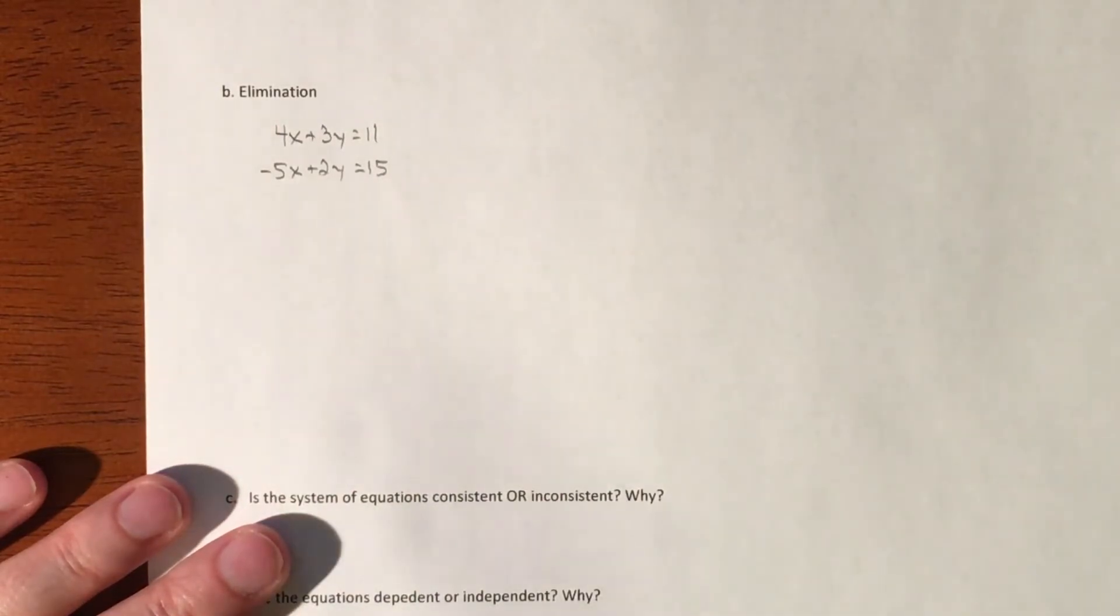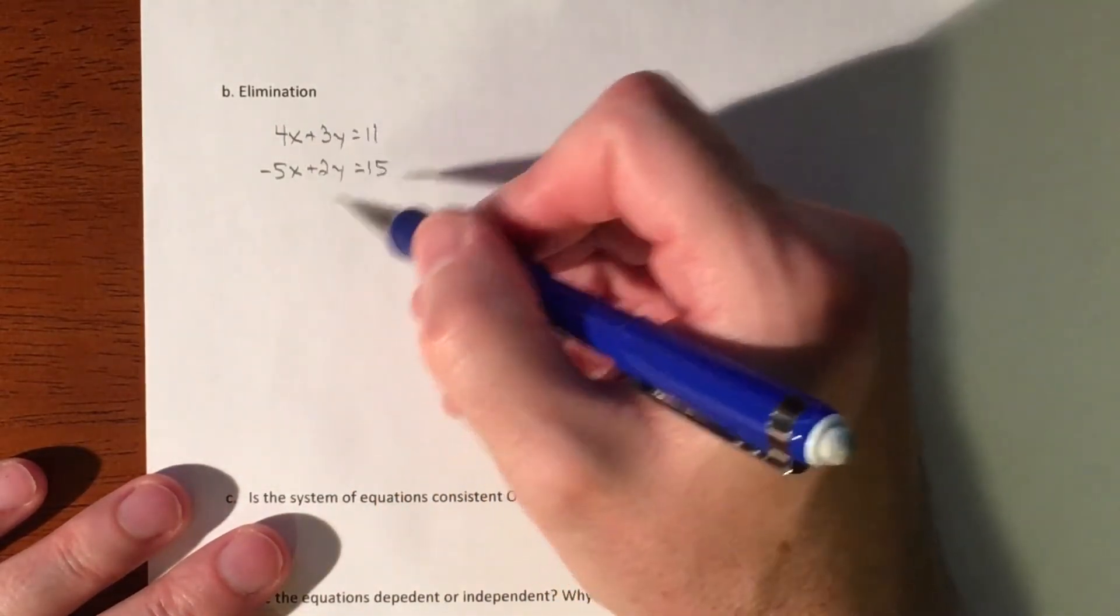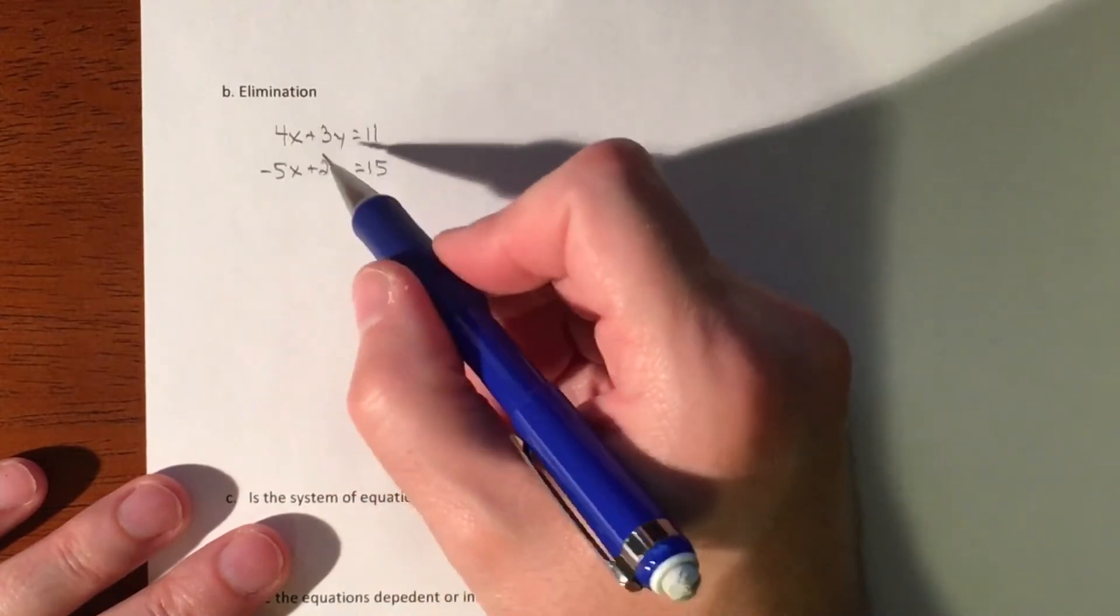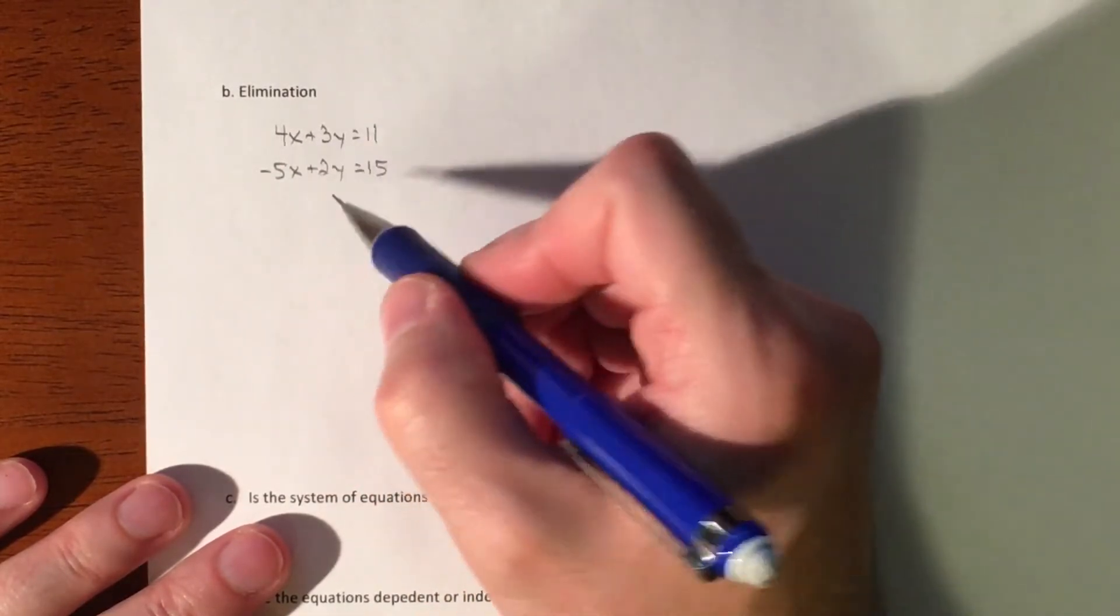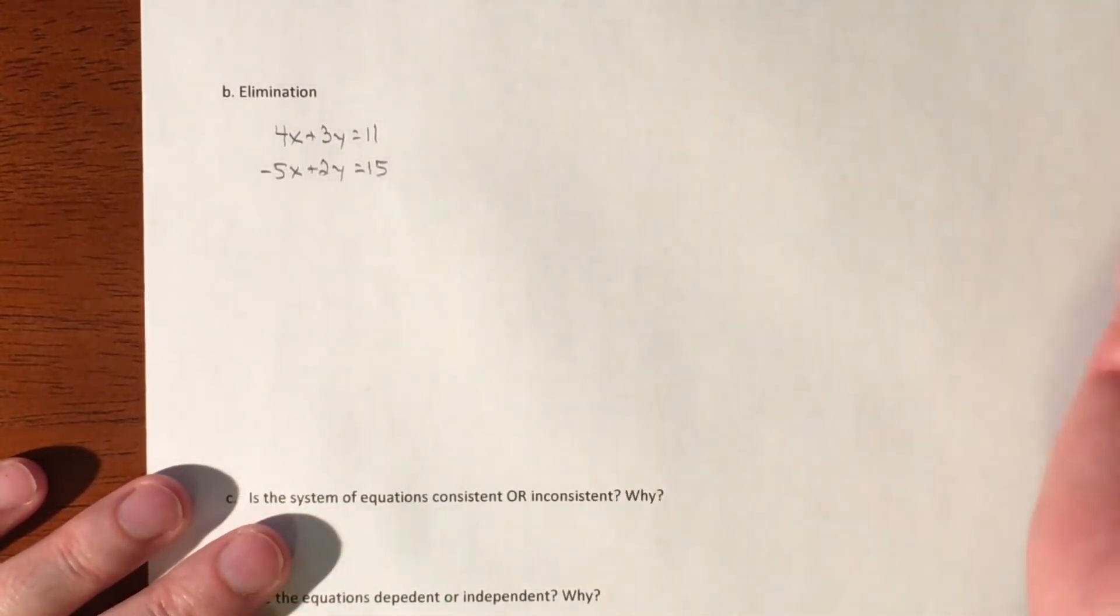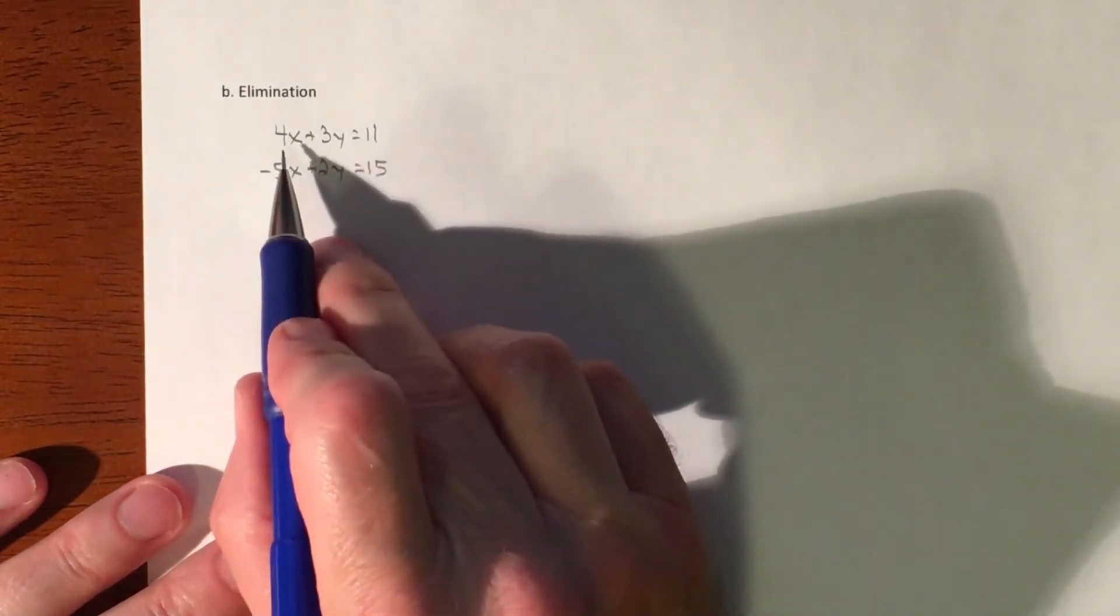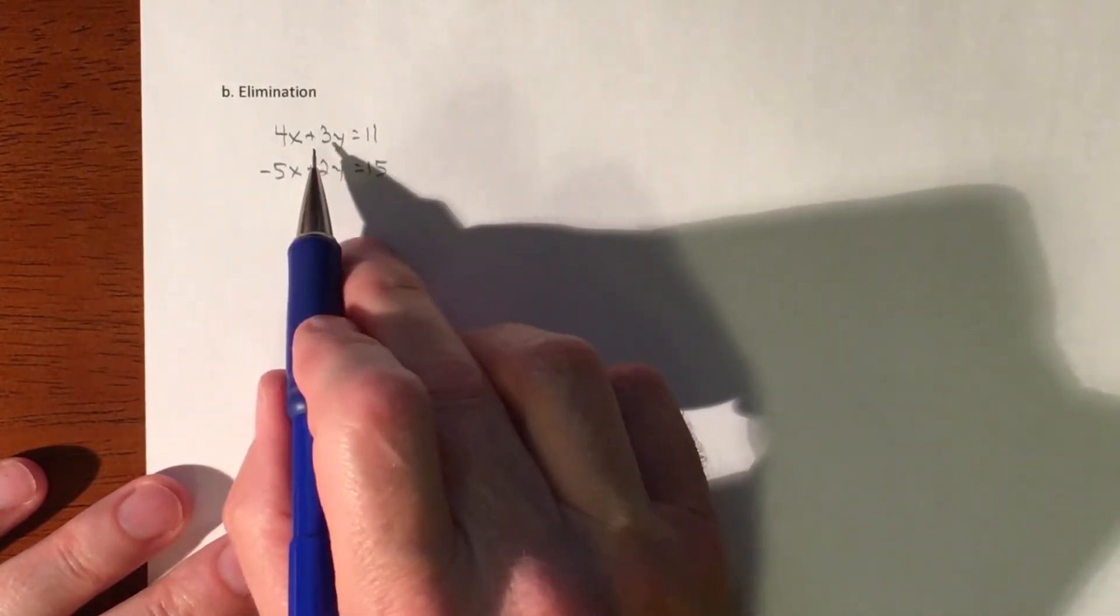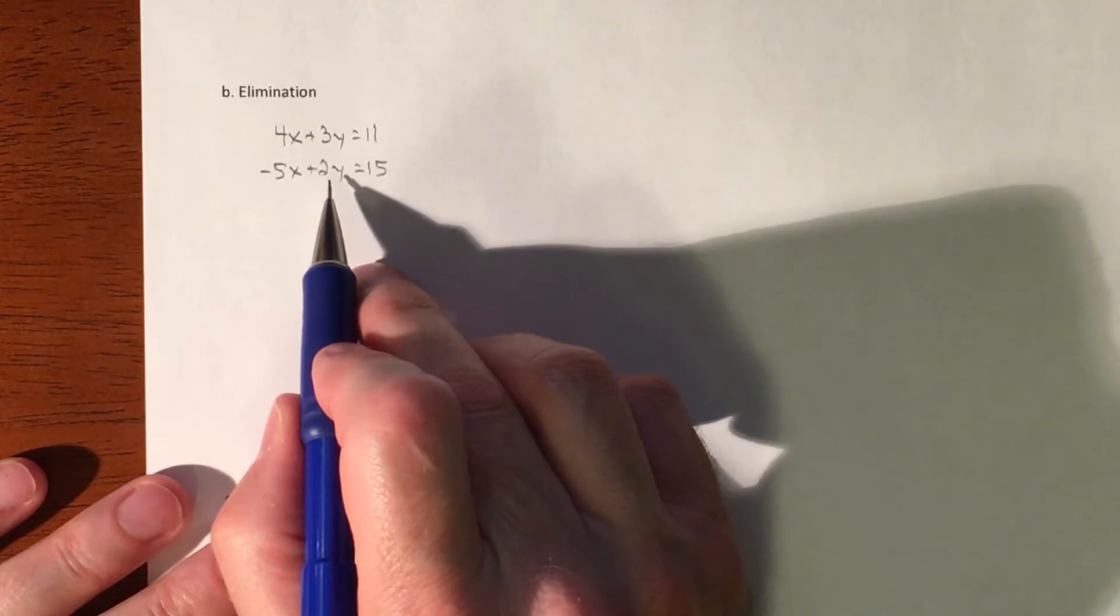So elimination. We're looking to combine our x's, combine our y's, combine our constants, and our goal is to cancel out either your x's or the y's. Does not matter. 100% up to you. But you're gonna manipulate both these equations to make the x's go away or make the y's go away.